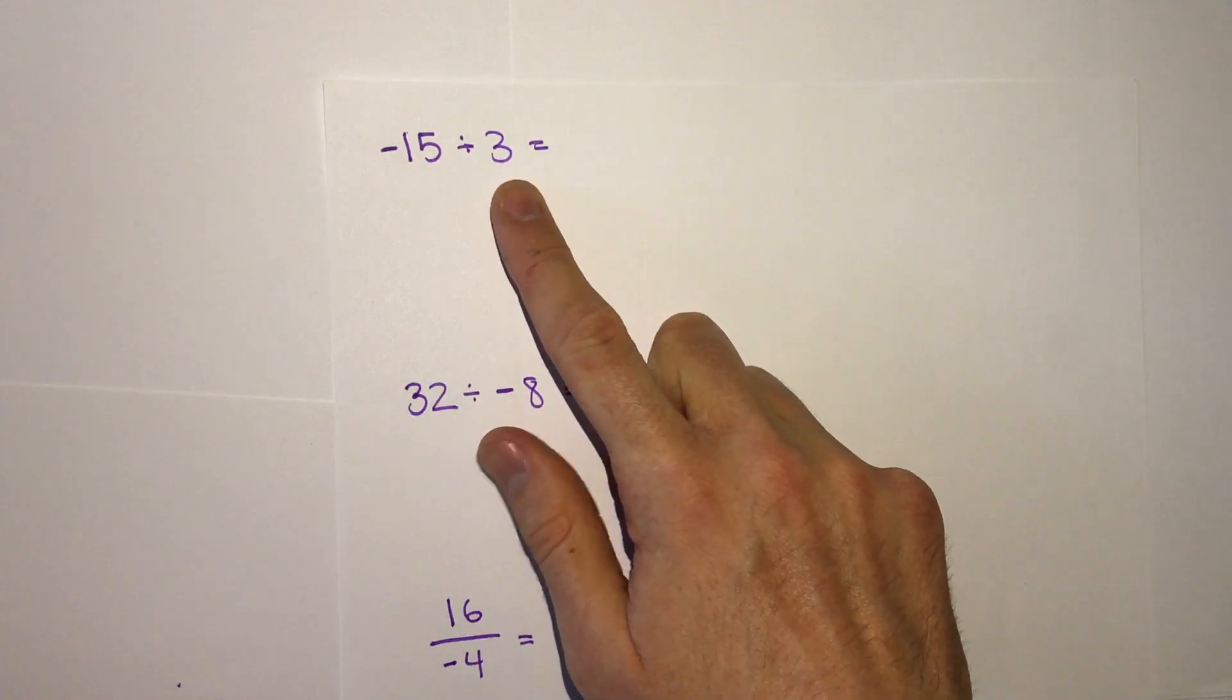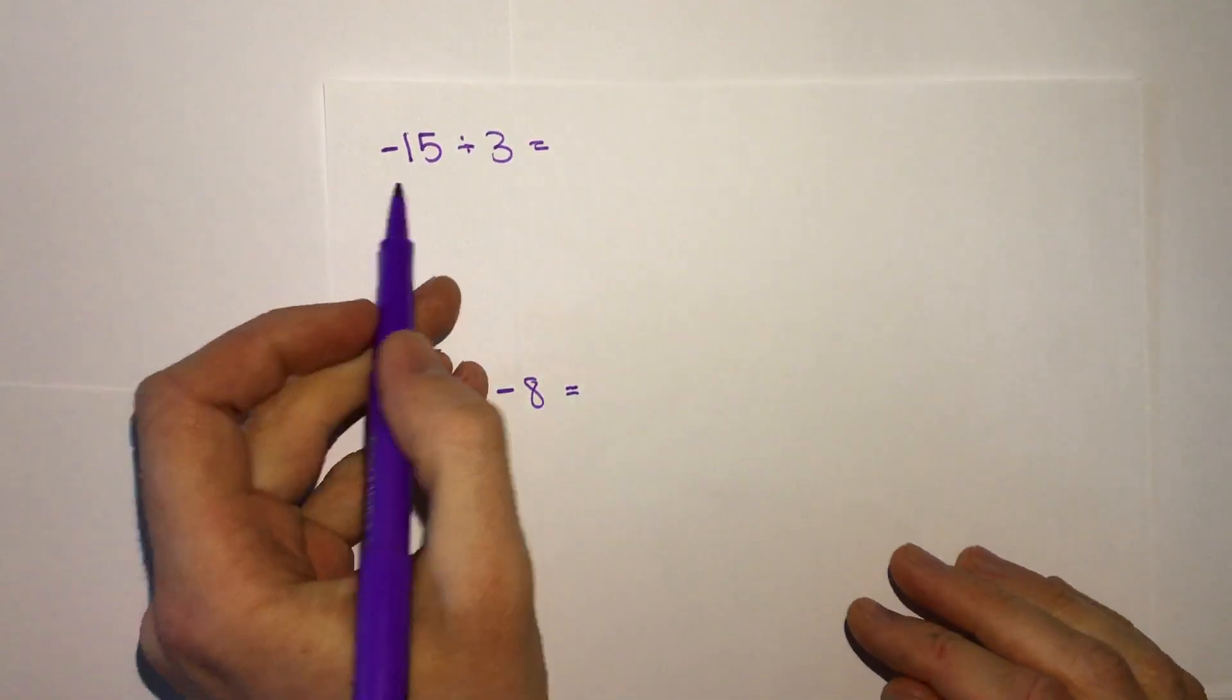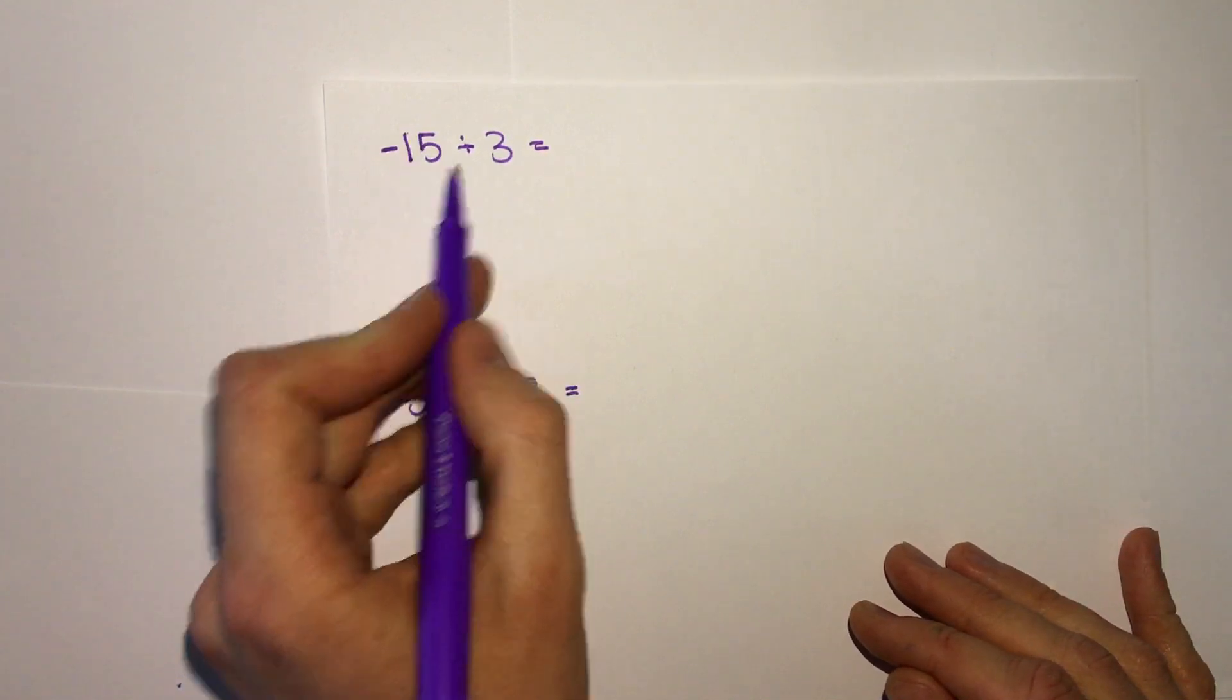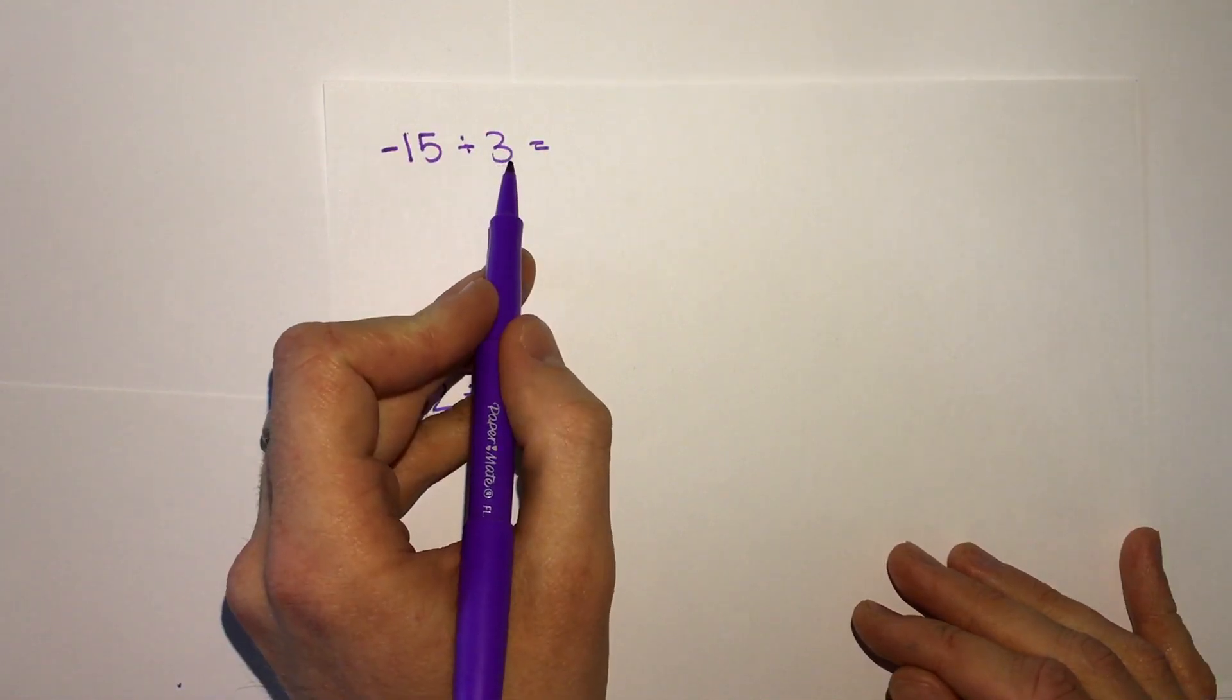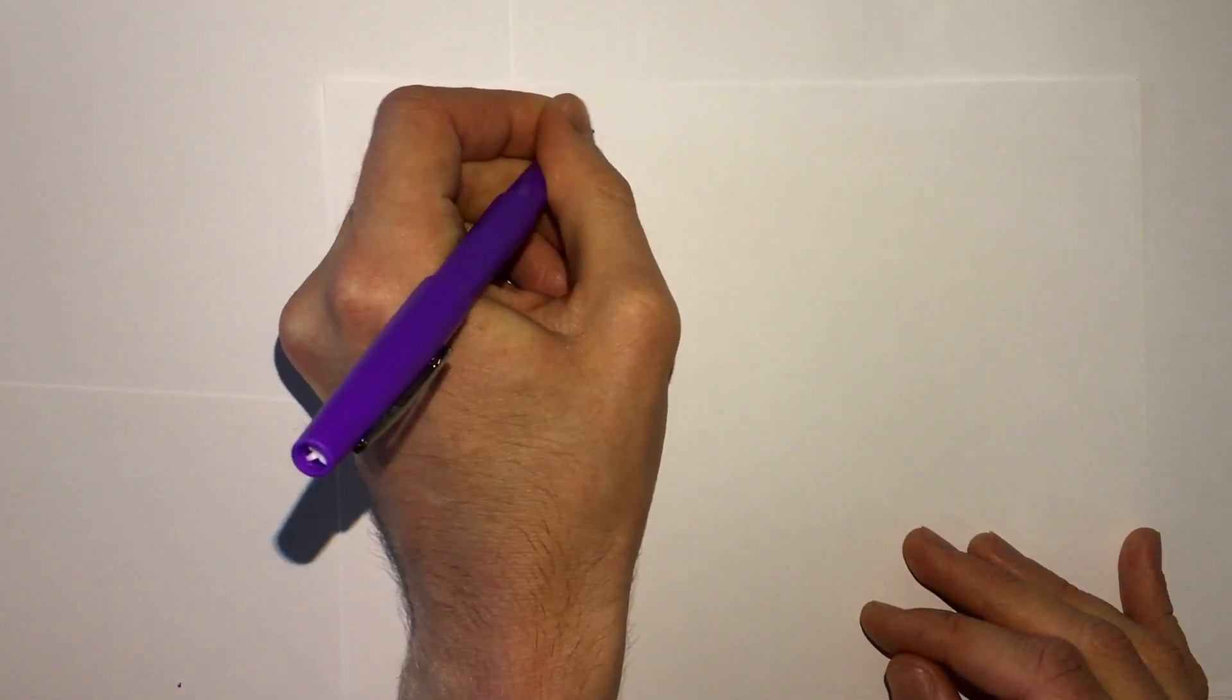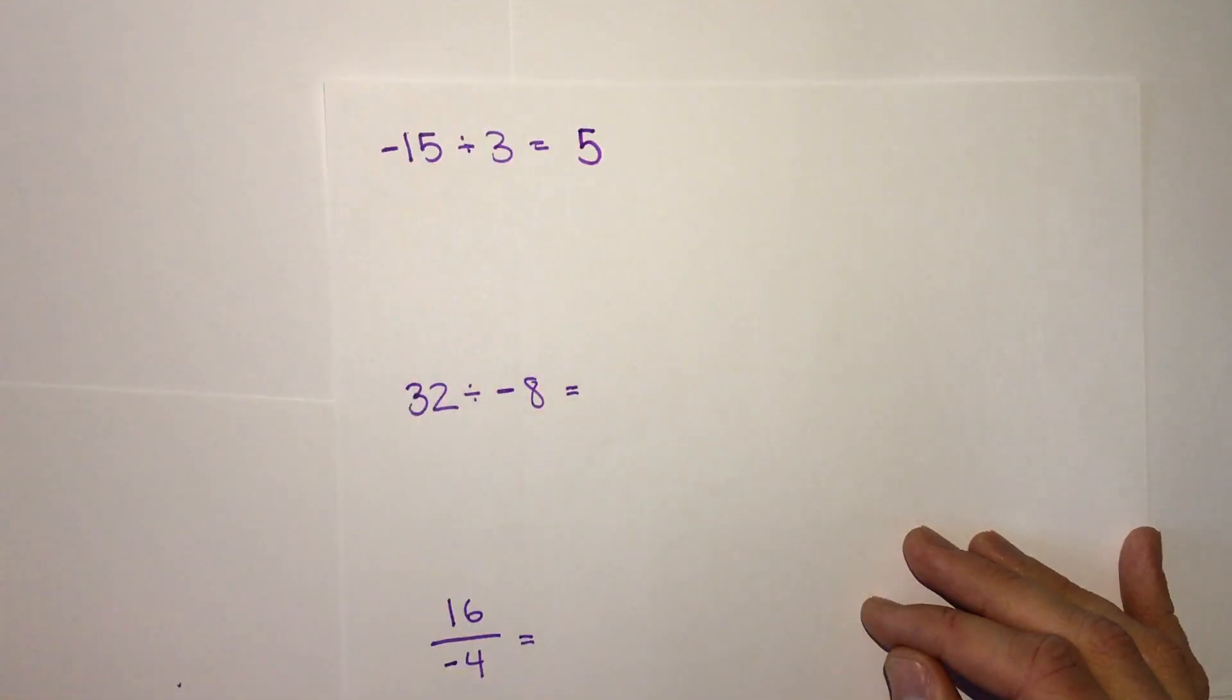Now let's look at division. The nice thing is division has the exact same patterns. Just as if we multiply a negative by a positive number, when we divide negative 15 by 3, this literally means how could we take negative 15 into three parts? Well, 15 can be divided into 3 with 5. Since it's negative, our answer will be negative 5.